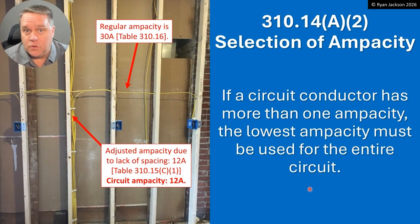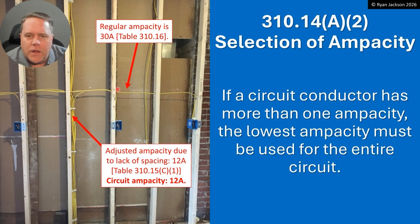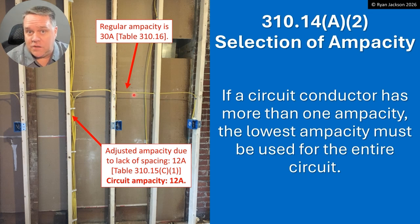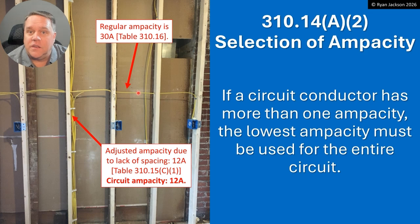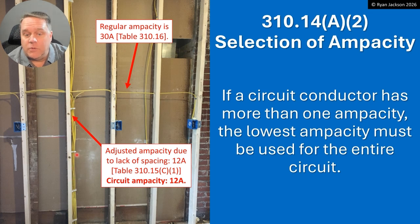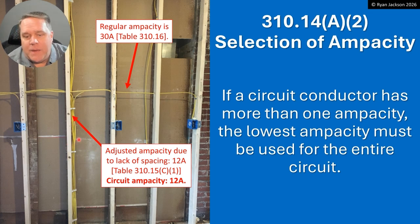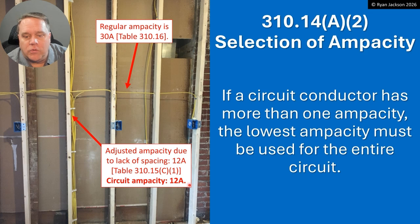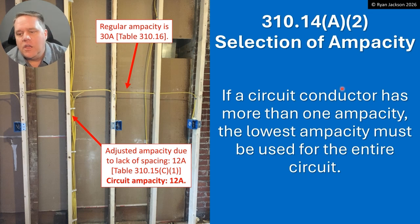How can a conductor have more than one ampacity? The answer is different conditions of use in a single circuit. Take 12-gauge NM cable: straight from Table 310.16, at 78–86°F ambient with no more than three current-carrying conductors, you get the standard ampacity. But then look what happens under a different condition of use — when a whole bunch of cables are bundled together without maintaining spacing. That lack of spacing reduces the ampacity down to 12 amps after the adjustment in 310.15(C)(1). So we have one wire with two different ampacities: 30 amps and 12 amps.